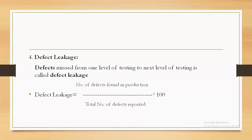Defect leakage refers to defects missed from one level of testing to the next level of testing. It is calculated as: defect leakage = (number of defects found in production / total number of defects reported) × 100. These are the four types of test metrics.